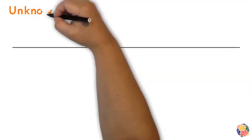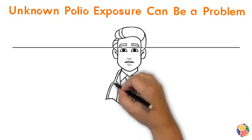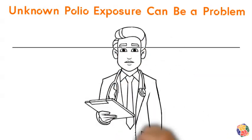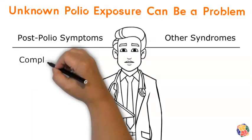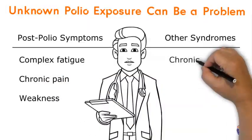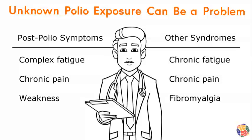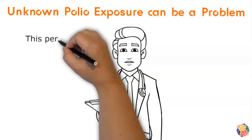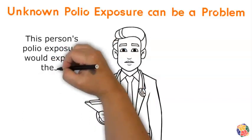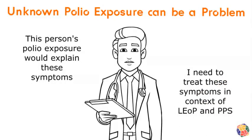Where there is no awareness of polio exposure in a person's medical history, misdiagnoses with other conditions can be a problem. If you think about the three most common symptoms of post polio conditions — fatigue, pain, and weakness — you can understand why diagnoses such as chronic fatigue syndrome, chronic pain, or fibromyalgia can be misattributed to a person who was actually exposed to polio. If polio exposure is realized as a context for the symptoms, those diagnoses would fail their own exclusion criteria, and the treatment plan would be reoriented towards post polio syndrome.